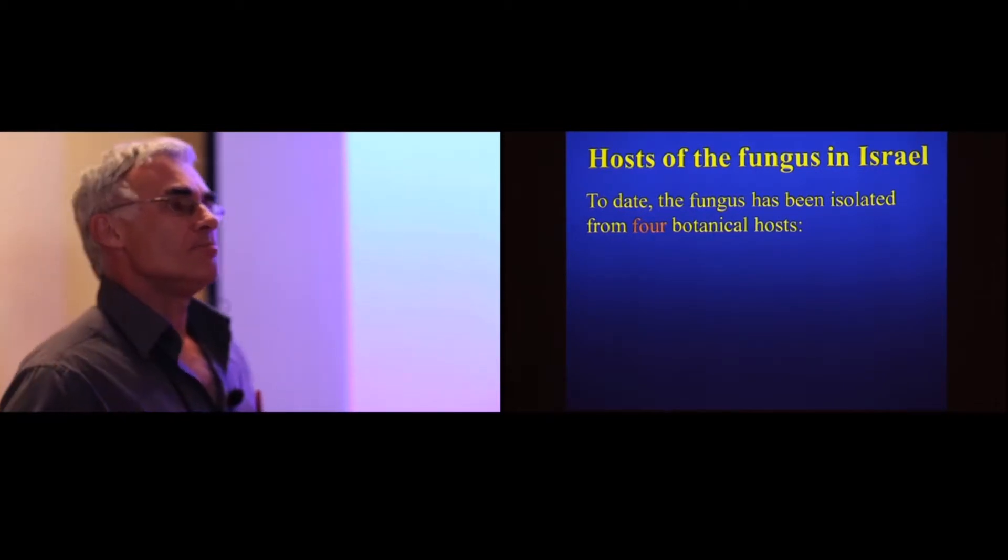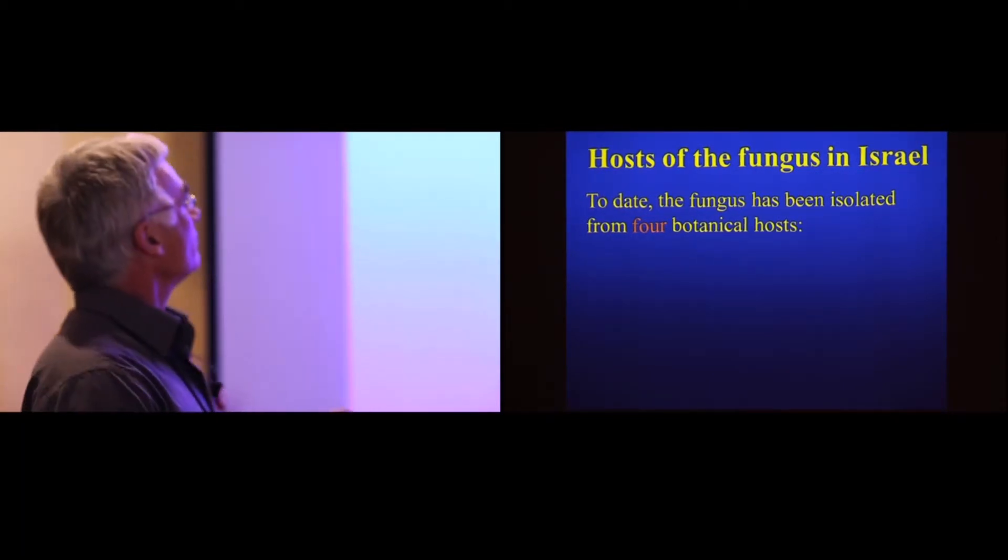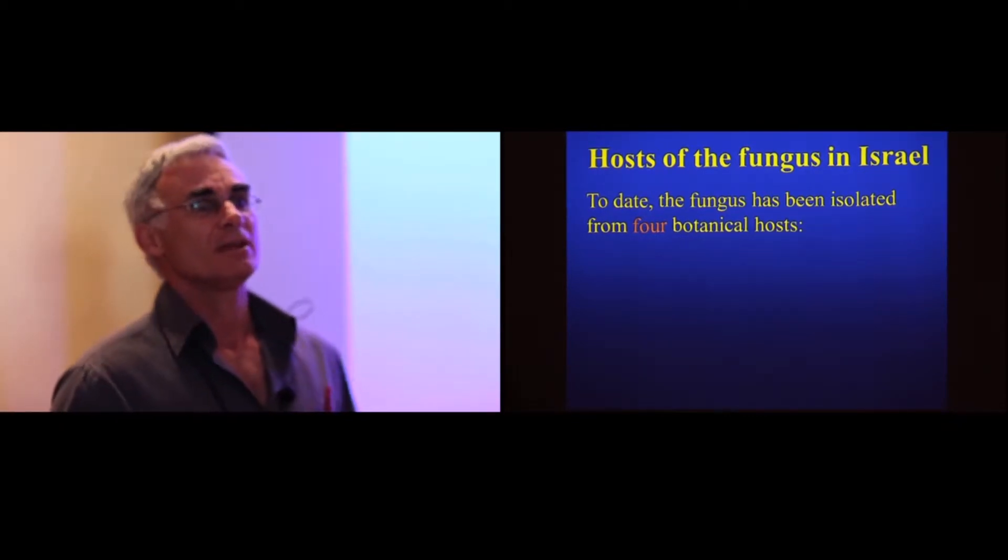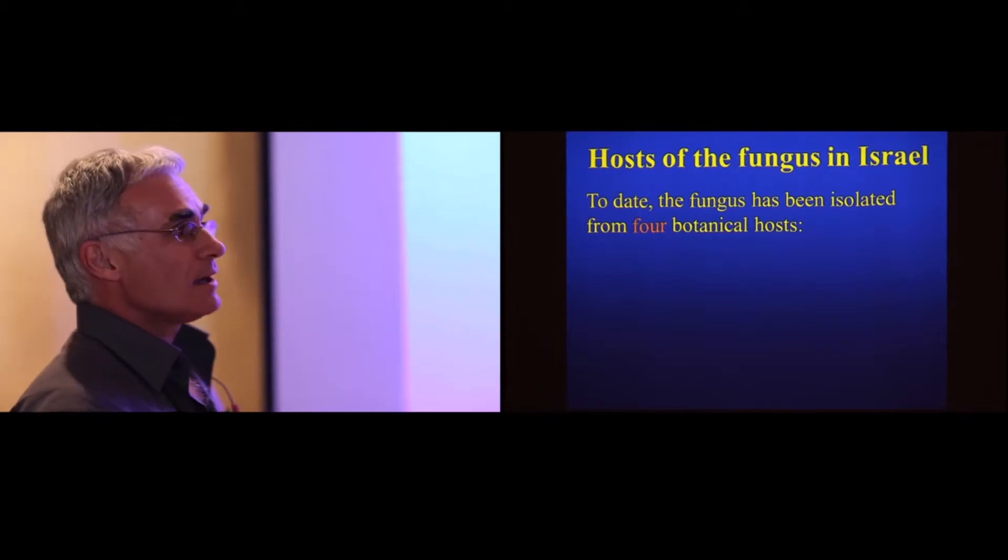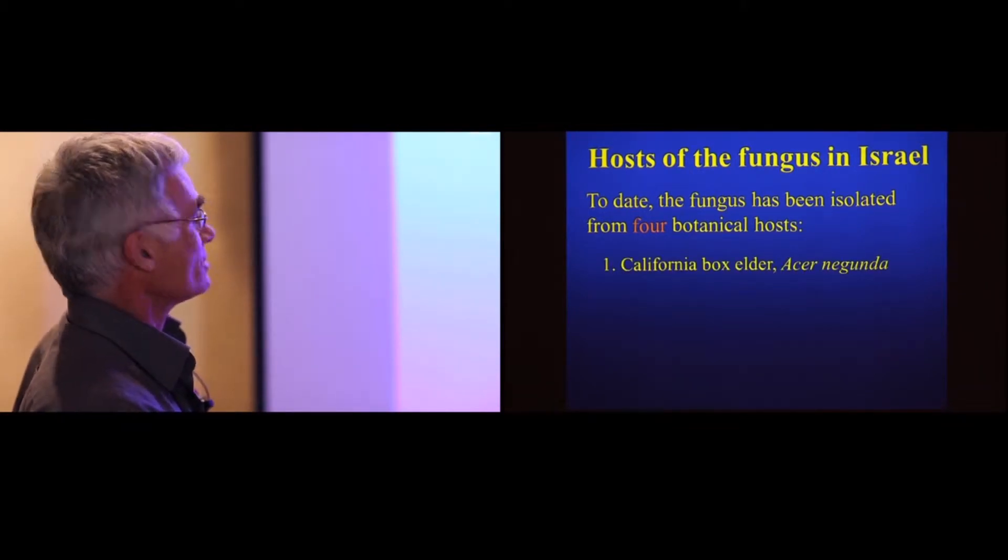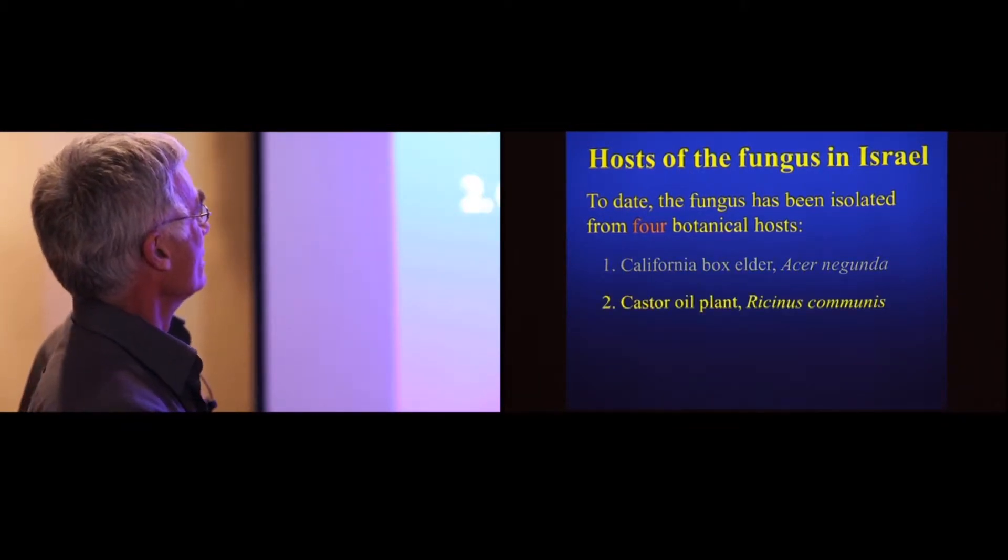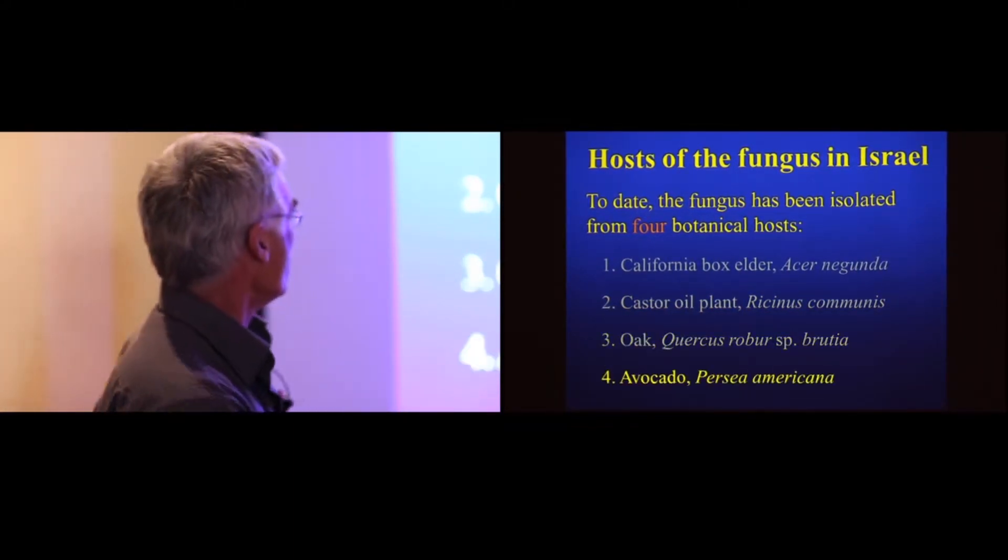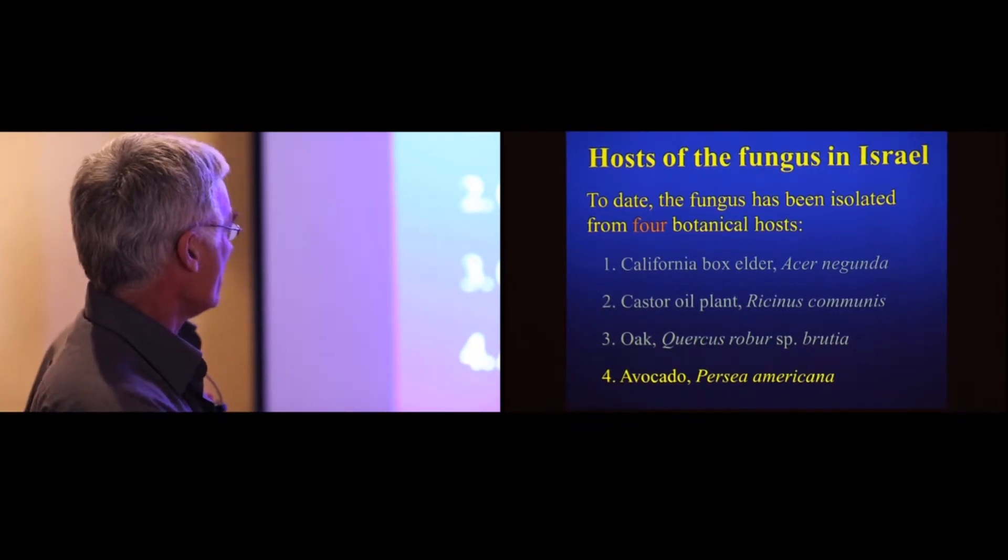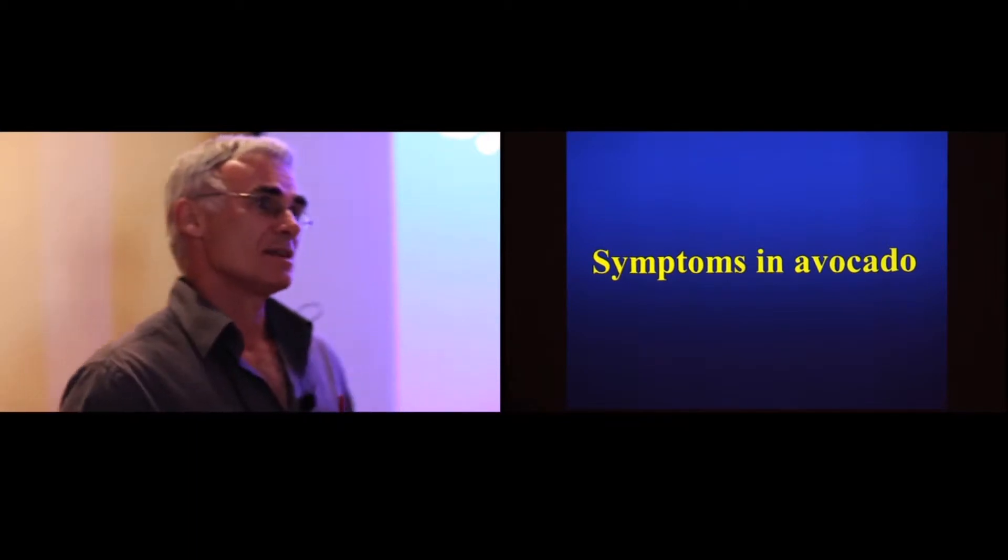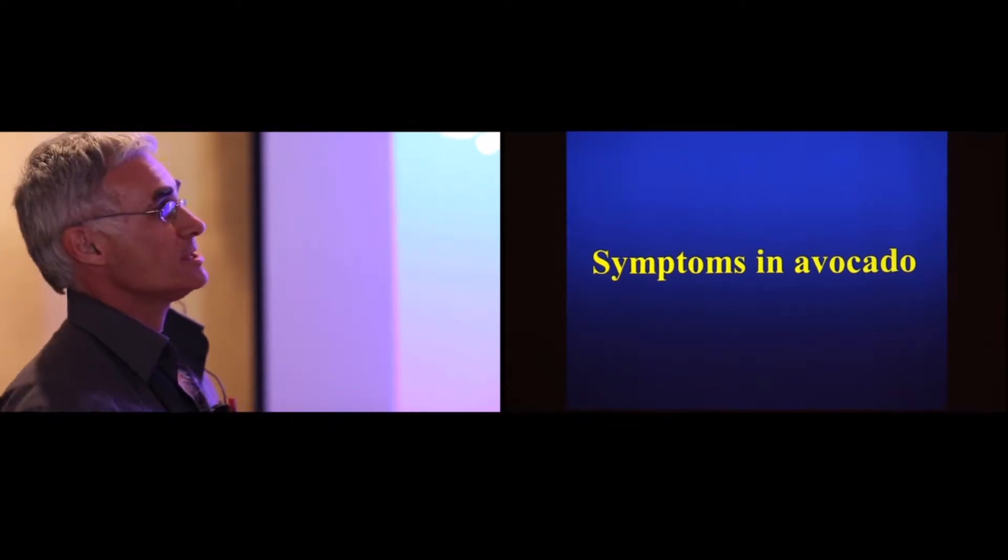Before I go on, the host that is predominantly affected in Israel is avocado. Swee has shown some of the other hosts that are affected. The California boxelder, castor oil, oak, and avocado. Some of the symptoms you saw already in the tree slides, and you'll probably see more tomorrow.